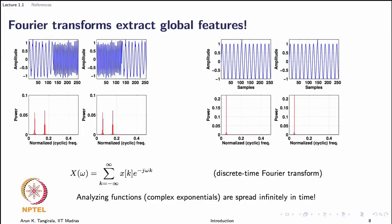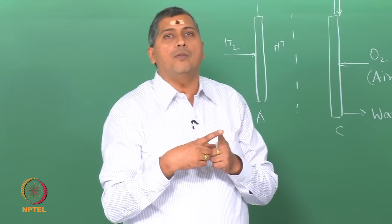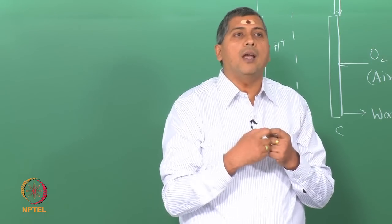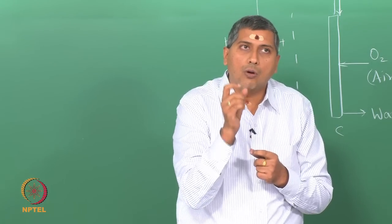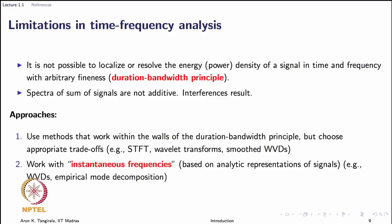The prime reason why Fourier analysis is unable to extract local features is that its analyzing functions — the complex sinusoids — are spread throughout time. The main message therefore is: if I want to capture local features in time, I need basis functions that are highly localized in time. That is the basic effort in short-time Fourier transform. But before we talk about any technique, we should understand that there are fundamental limitations in time-frequency analysis because of the duration-bandwidth principle, which says I cannot obtain local information in time and frequency with arbitrary fineness.